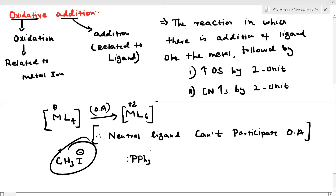When a neutral ligand is added, the coordination number increases by two factors, but the oxidation state is never changed, because neutral ligands don't cause charge separation.